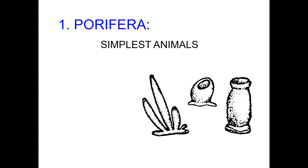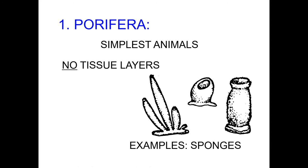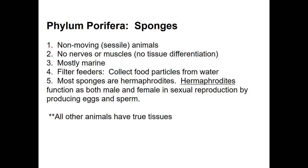Porifera — these are your simplest animals, your sponges. There are no true tissue layers. They are non-moving, sessile animals; they have no nerves or muscles. They're mostly marine. They're filter feeders — they collect food particles from the water. Because they're sessile, they live in areas where there is a bit of a current, so the water will filter through them and they'll collect whatever comes through them. Most sponges are hermaphrodites — they function as both male and female in sexual reproduction by producing both eggs and sperm.